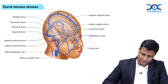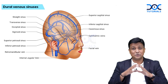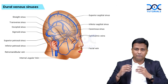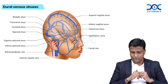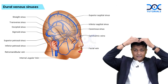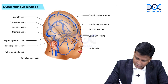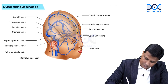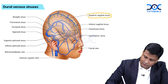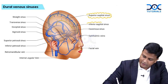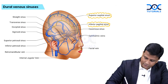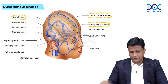Let me show you a diagram on the screen of the dural venous sinuses, and after that we will draw it. In this diagram, exactly in the center of the body there is a dural venous sinus known as the sagittal sinus. There are two of them: the superior sagittal sinus above and the inferior sagittal sinus below. These two connect with the straight sinus.